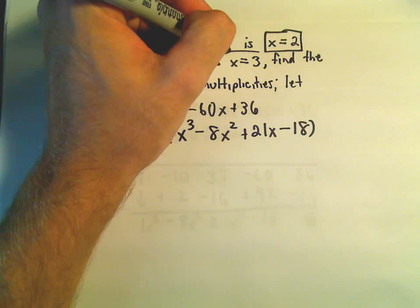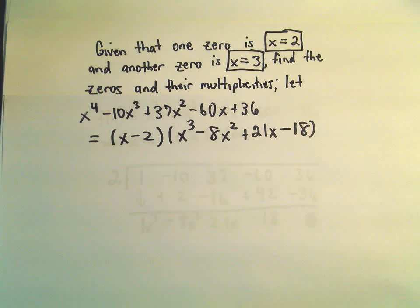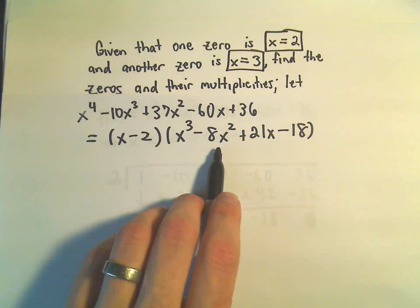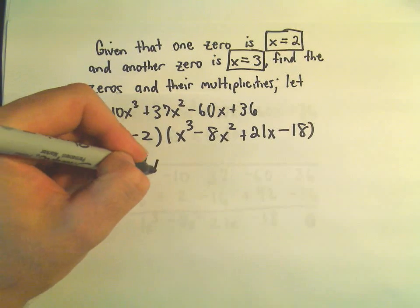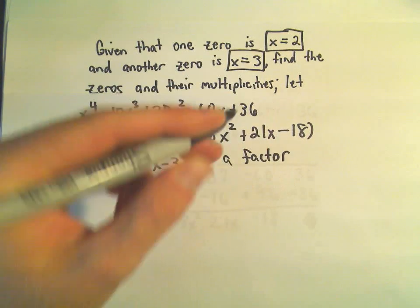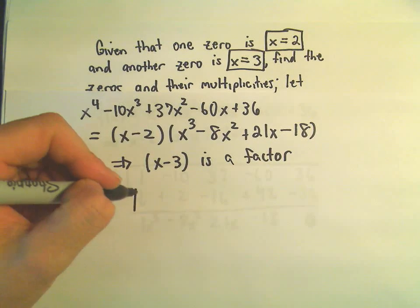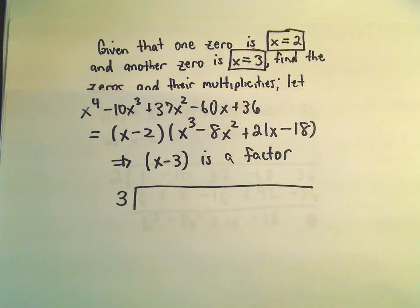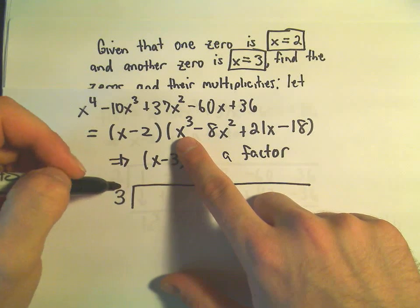So now I'm going to use this extra bit of information that x equals 3 is also a factor. So what that means is, if I divide x cubed minus 8x squared plus 21x minus 18 by x minus 3, again that's going to help me factor my polynomial a little further. So I'm going to do synthetic division again. This time using 3. And now I'm using this new polynomial so I can factor it a little further, because again I know 3 has to be a factor of it.